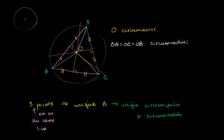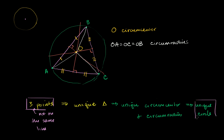And if you give me any point in space and a radius, the set of all points that are exactly that radius away from it defines a unique circle. So we went through all of this to really just show you that if you give me any three points, that eventually defines a unique circle. Just as you need three points to define a triangle, you also need three points to define a circle.